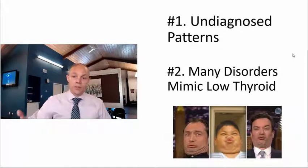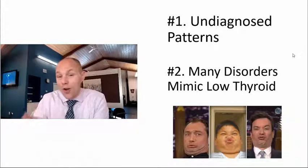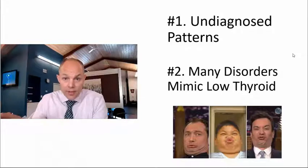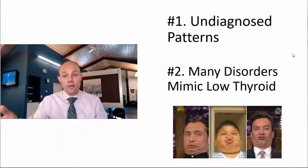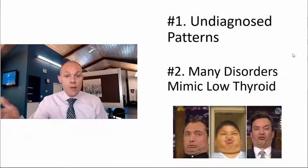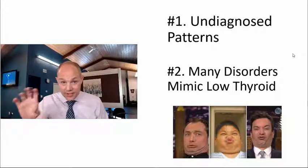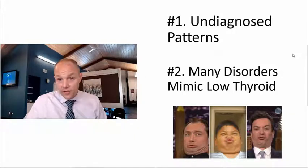When you look at this, number one, there are undiagnosed patterns. If we're not running all 10 markers and not understanding what those markers are doing, we're not turning possibilities into probabilities — you're not getting a full comprehensive diagnosis. Number two, there are many disorders that mimic a low thyroid. It's not just one thing, so let's not keep tracking only the TSH. There could be other things flying under the radar because we automatically assume it's a low thyroid.